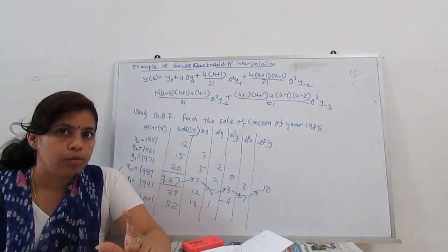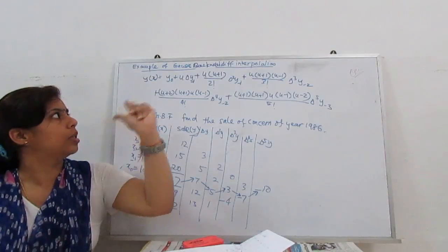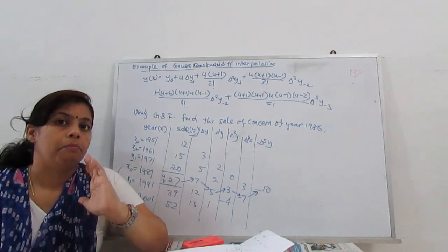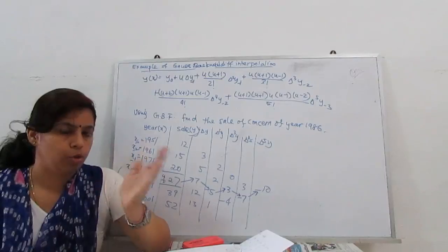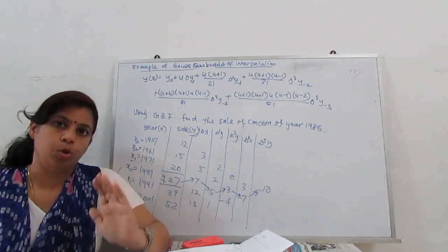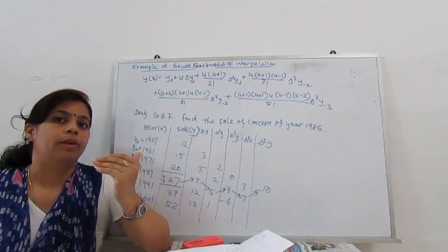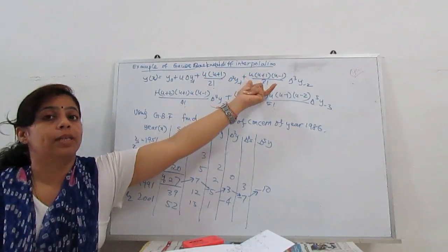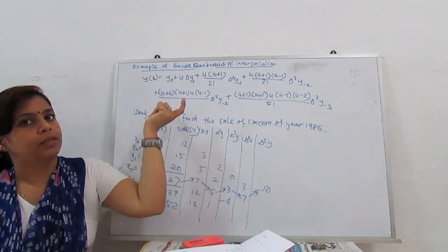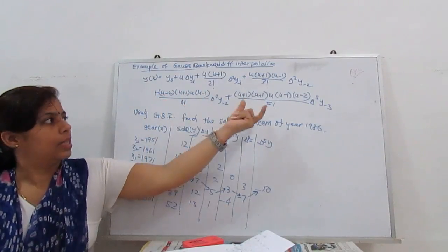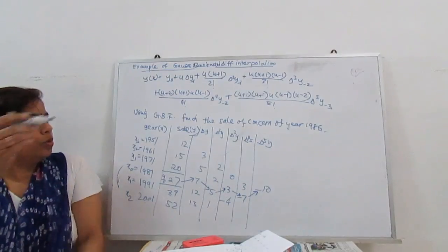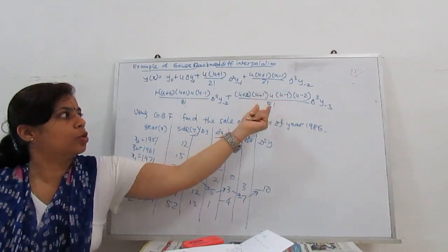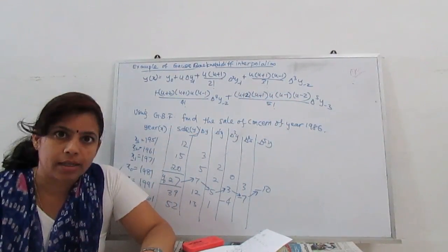The key difference between forward and backward formulas is: in the backward formula the factors are u(u+1), while in the forward formula they are u(u−1). In Newton's formula it is the same — u(u+1) for backward and u(u−1) for forward. The full fifth-order backward formula has factors u; u(u+1); u(u+1)(u−1); u(u+1)(u−1)(u+2); and u(u+1)(u−1)(u+2)(u−2) over factorial 5, applied to Δ⁵y₋₂.